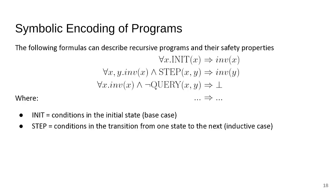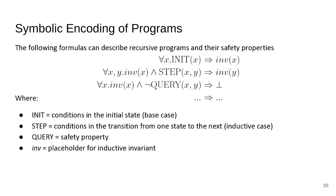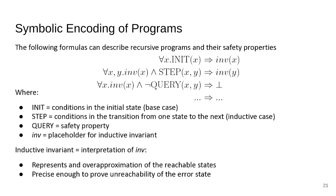The next line encodes how we transition from one state to the next, corresponding to the inductive case. We also have a user-defined query that must hold in all states. The italicized INV is a placeholder for what we call an inductive invariant — simply an interpretation for INV that makes all of these clauses true.